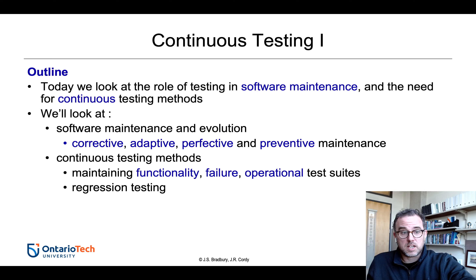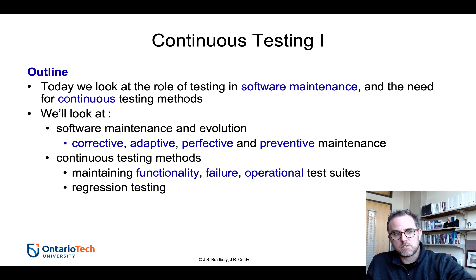The other thing to consider during maintenance is continuous testing — the testing we do after the first deployment, continuously testing as we maintain the software. Anytime we change or update the software, we need to test, and we often do what's called regression testing. The three main test types used are functionality tests — black box tests based on requirements — as well as failure tests and operational tests.